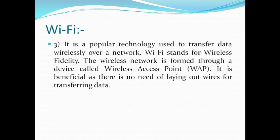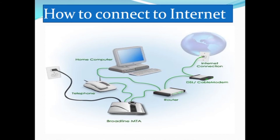The next wireless technology is Wi-Fi — Wireless Fidelity — a popular technology used to transfer data wirelessly over a particular network. The wireless network is formed through a device called a wireless access point (WAP). It is beneficial as there is no need for laying out wires. Here in the picture you can see how to connect devices to the internet — telephone line, broadband, MTA router, DSL cable modem — all passing through a sequence to connect the system to the internet.